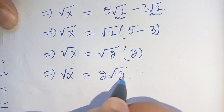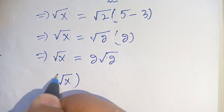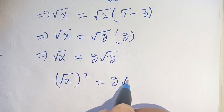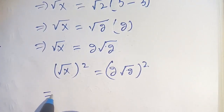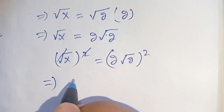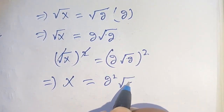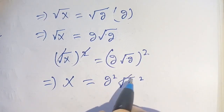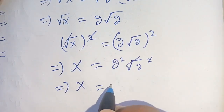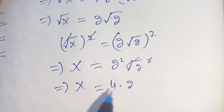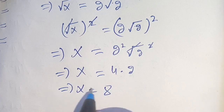Now squaring both sides, we get x is equal to (2 square root of 2) squared. This gives us 2 squared times (square root of 2) squared. Cancelling the square with the square root gives 2 squared times 2, which is 4 times 2, equal to 8.